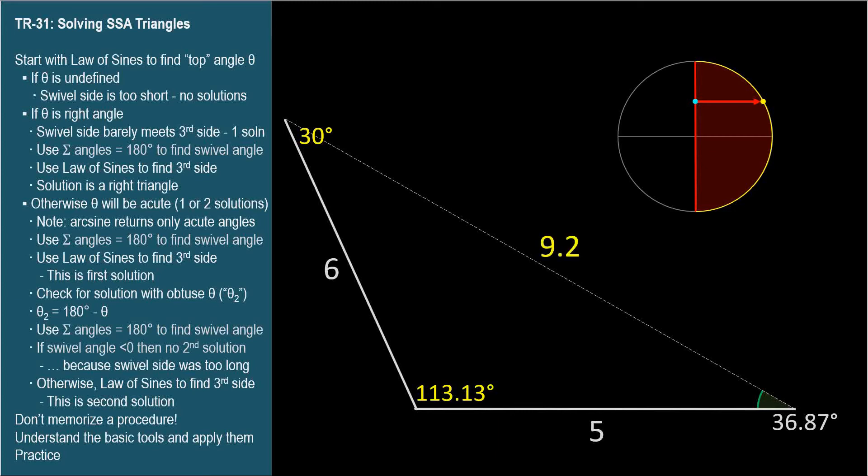We know that sine theta equals 0.5, and the arc sine function gave us a 30 degree angle. But there's an obtuse angle that also has a sine of 0.5. It's 150 degrees.